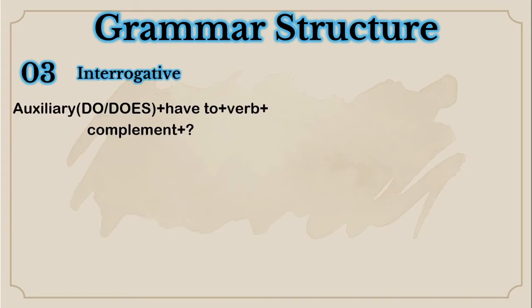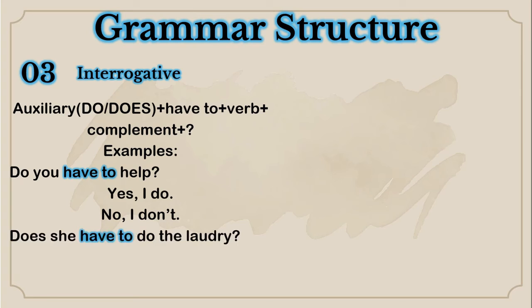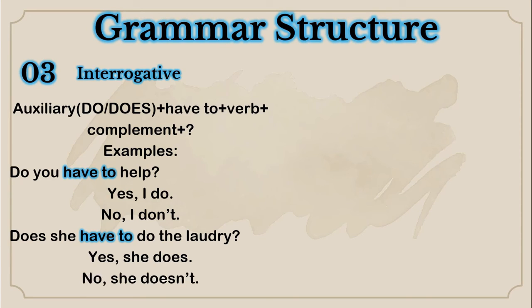Then you have the interrogative. Do or does — depending on the subject — plus have to plus verb plus complement, and don't forget the question mark. Examples: Do you have to help? Yes, I do. No, I don't. Here you answer with the auxiliary do. Does she have to do the laundry? Remember that in this case you don't use has to because you already have the auxiliary does — that's why you write the verb in the base form: have to. Yes, she does. No, she doesn't. These are just yes/no questions.